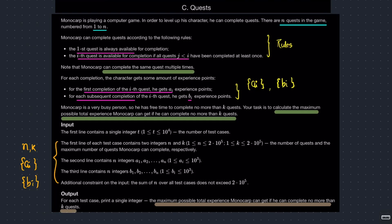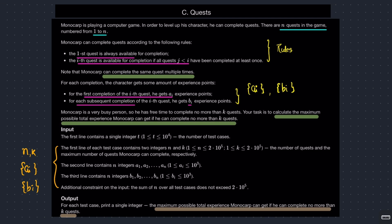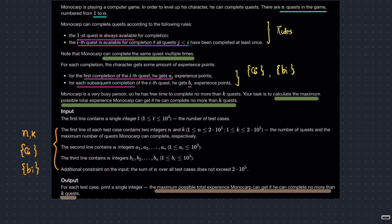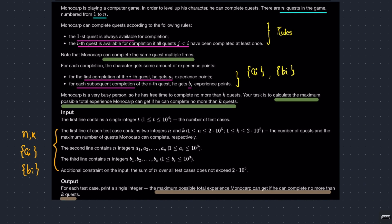Alright, welcome back everyone. Let's solve this question — Quests. I hope you read the question once, but I'll quickly summarize it. Monocarp is playing some game and there are n quests numbered from 1 to n that need to be completed.